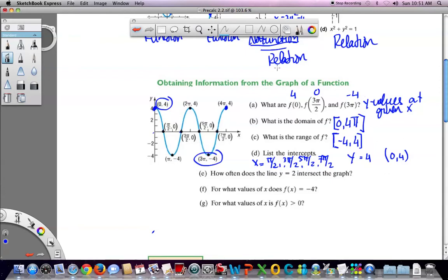How often does the line y equals two intersect the graph? Well, the line y equals two runs basically like this, right? It's a little crooked. It's good enough. Let's see, it intercepts one, two, three, four times.